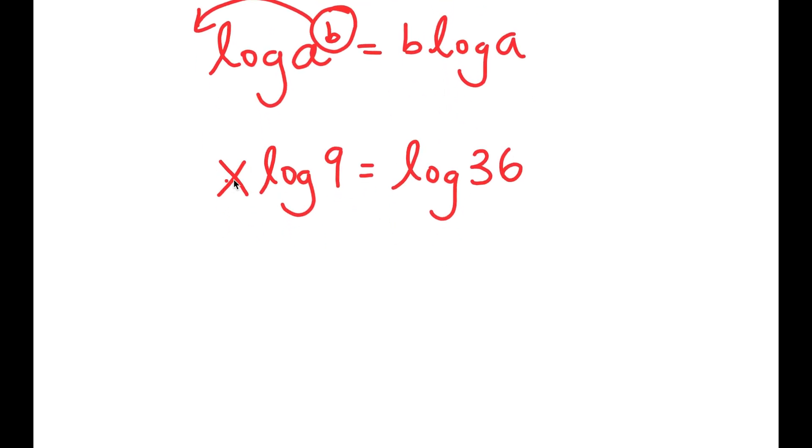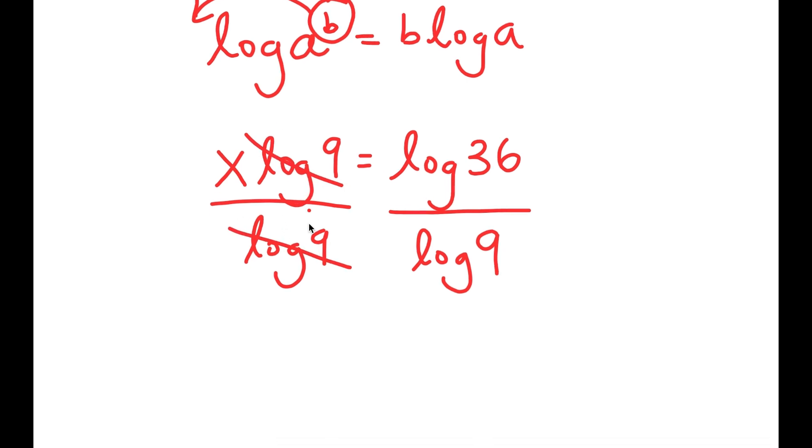And now, obviously, we want to isolate x, so I'm going to divide both sides by log 9. So then these two cancel out, and I get x is equal to log 36 over log 9.